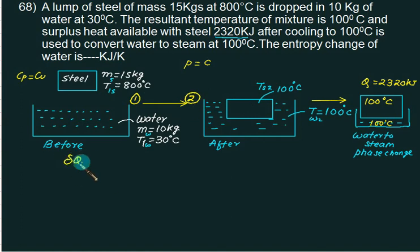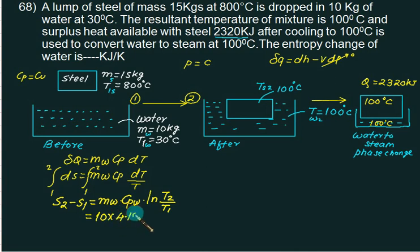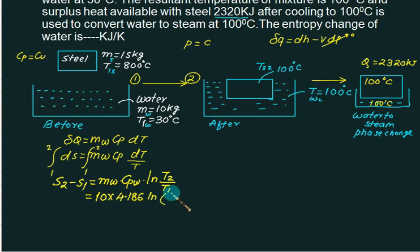So we have del Q equals mass of water into Cp into dt. Del Q equal to dx minus Vdp which is zero. Dx is Cp dt. Ds is del Q by T. So Ds is M into Cp multiplied by dt by T. So entropy change from 1 to 2 is S2 minus S1 is mass of water into Cp of water ln of T2 by T1. Mass of water is 10. Cp of water is 4.186 ln. The final temperature is 373 and initial temperature is 303.